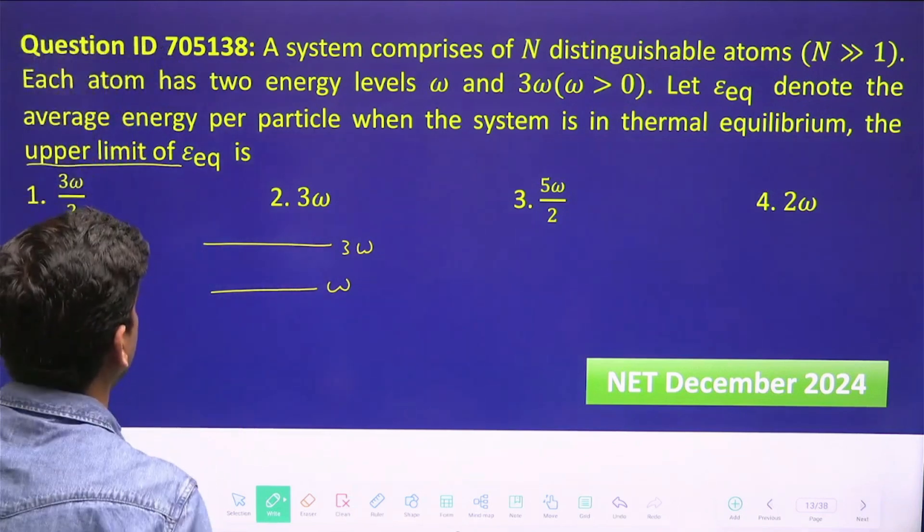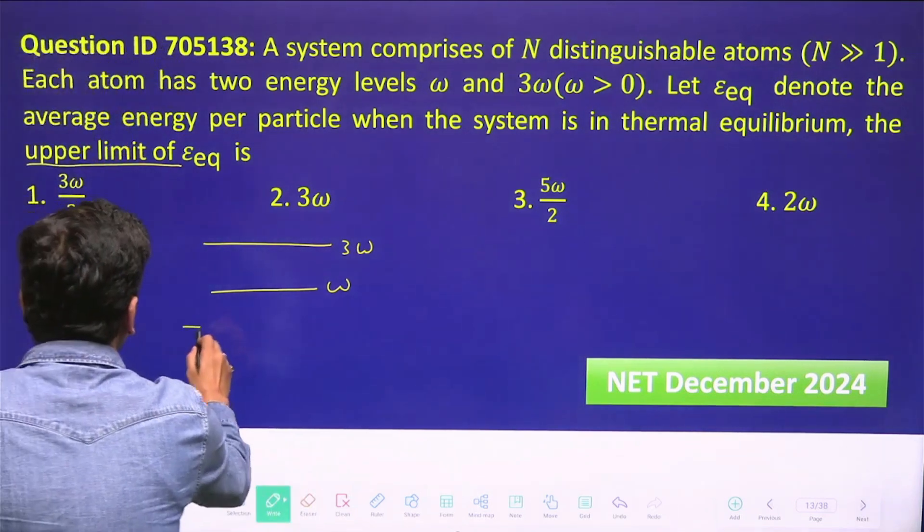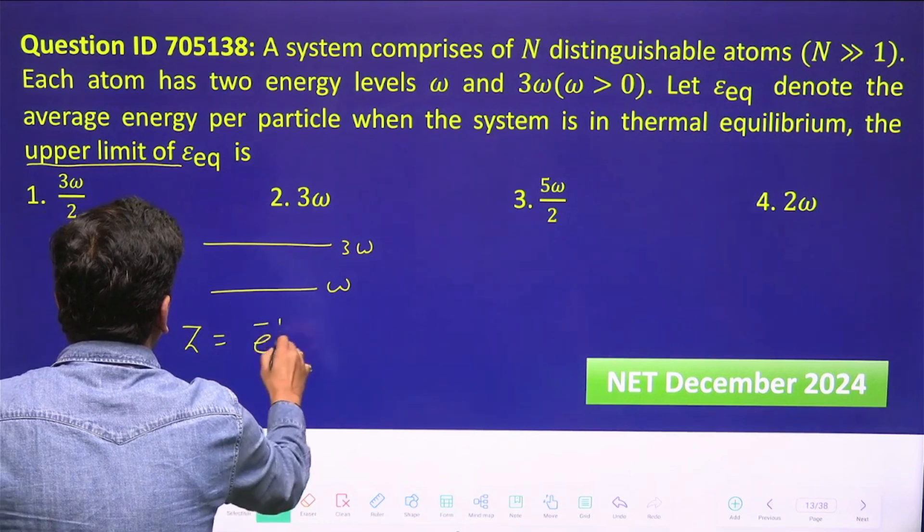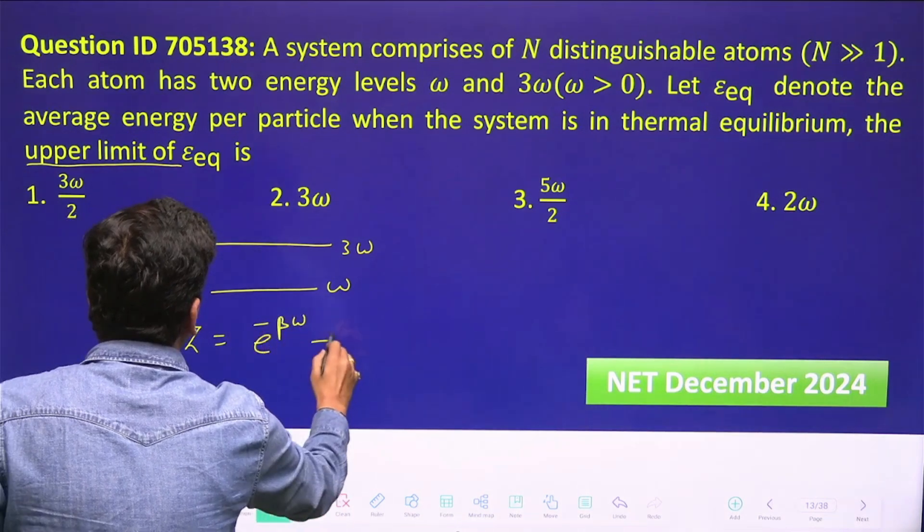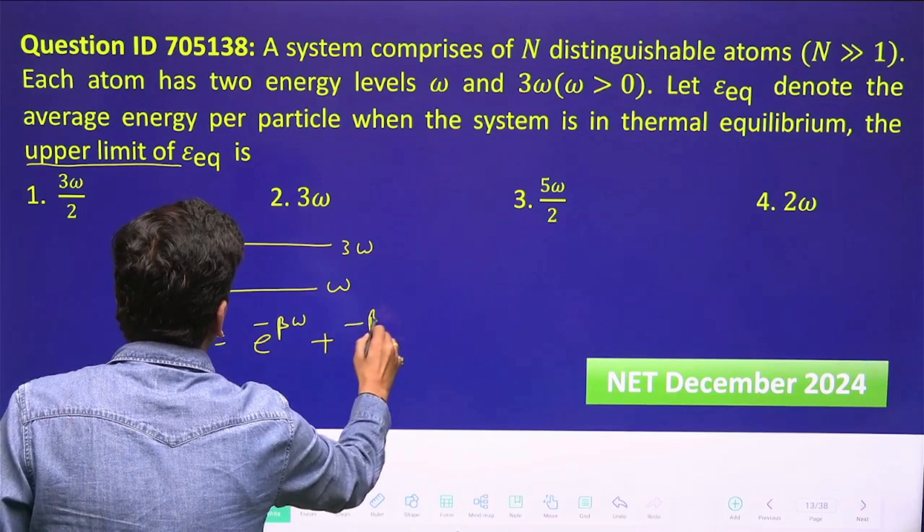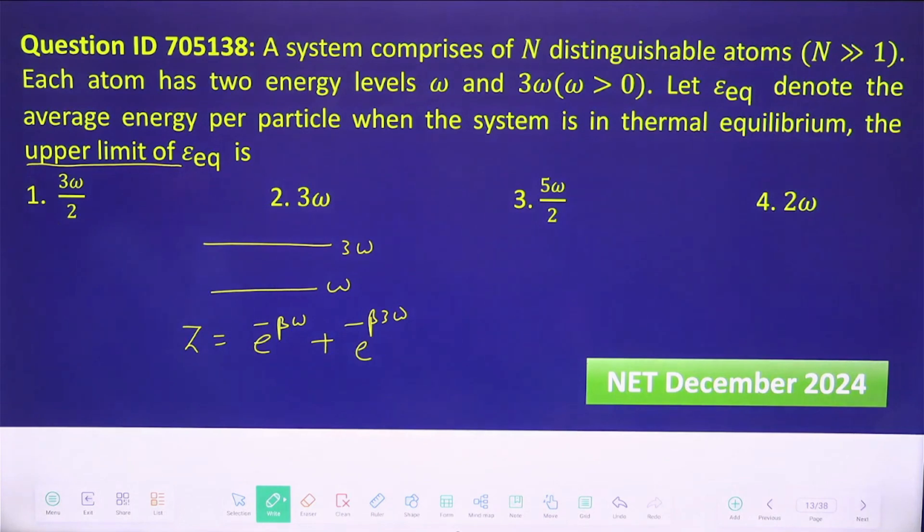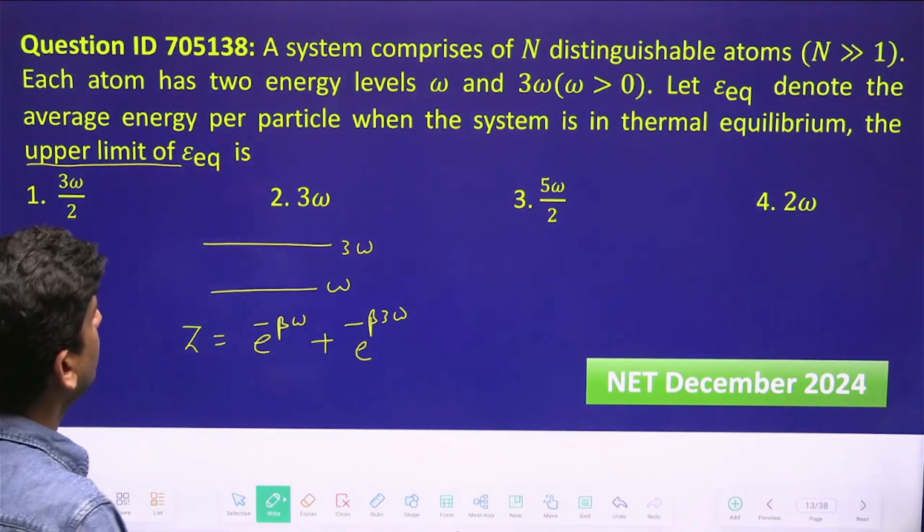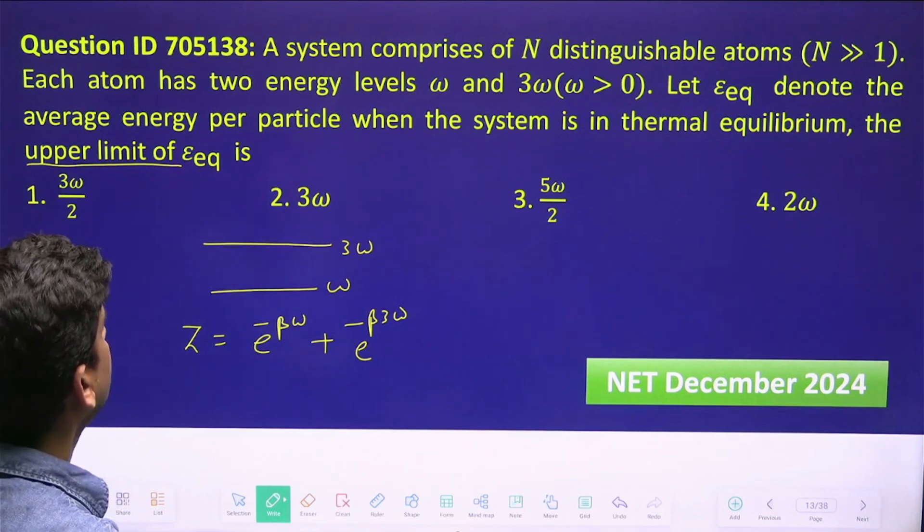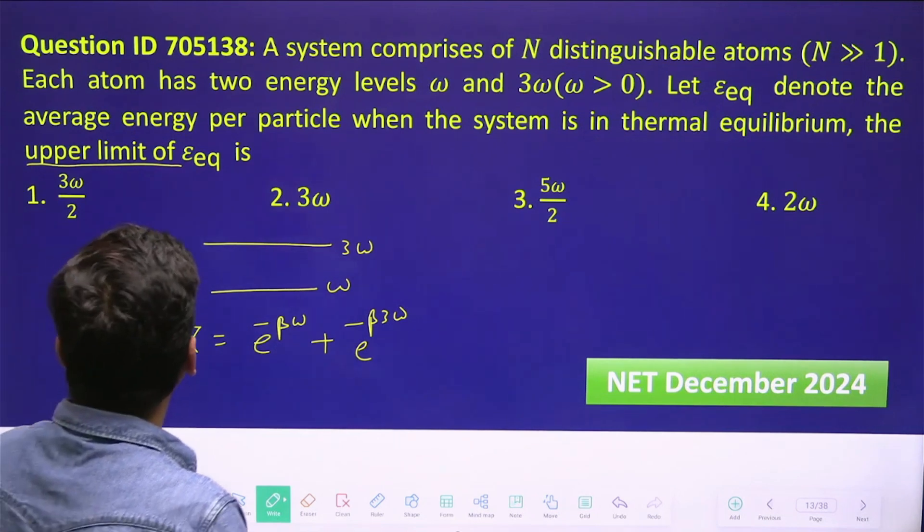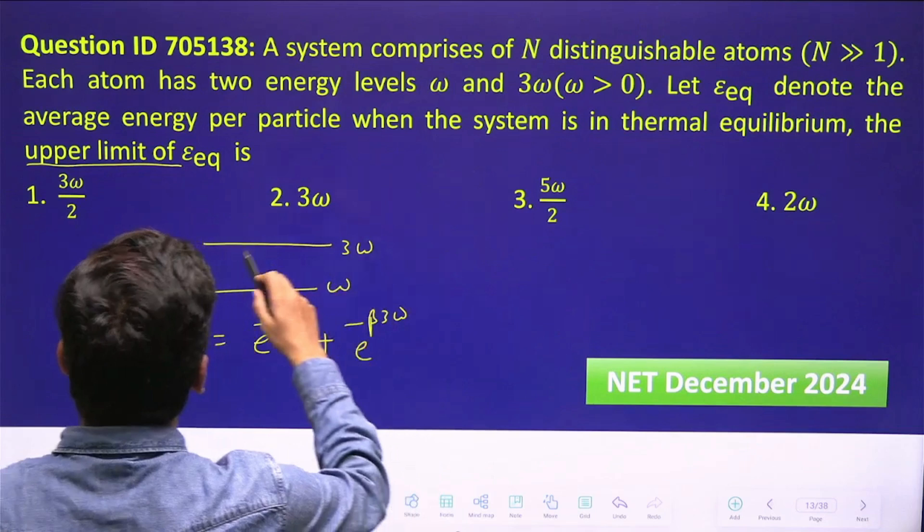We have two energy levels like this: omega and three omega. If I write its partition function, it will be Z = e^(-beta*omega) + e^(-beta*3*omega). Now we have to calculate average energy E_eq.